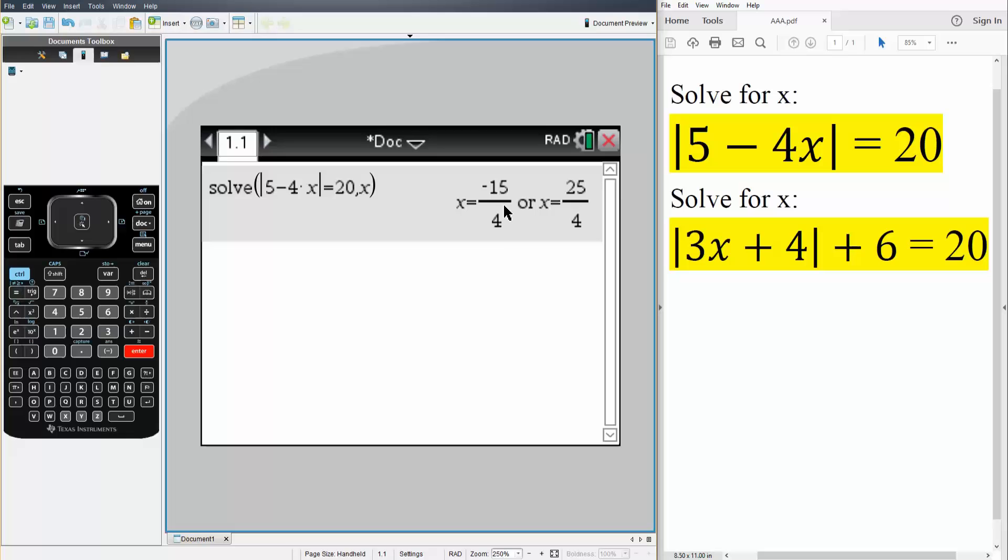And this makes sense because if x is negative 15 over 4 we plug in negative 15 over 4 we would get 5 plus 15 which is 20.